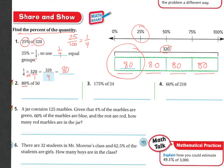Now let's do 80% of 50. 'Of' means multiply, so turn these into fractions: 80 over 100 times 50 over 1. 80 times 50 is 4,000, and 100 times 1 is 100. 100 goes into 4,000 forty times. So the answer is 40. 80% of 50 is 40.